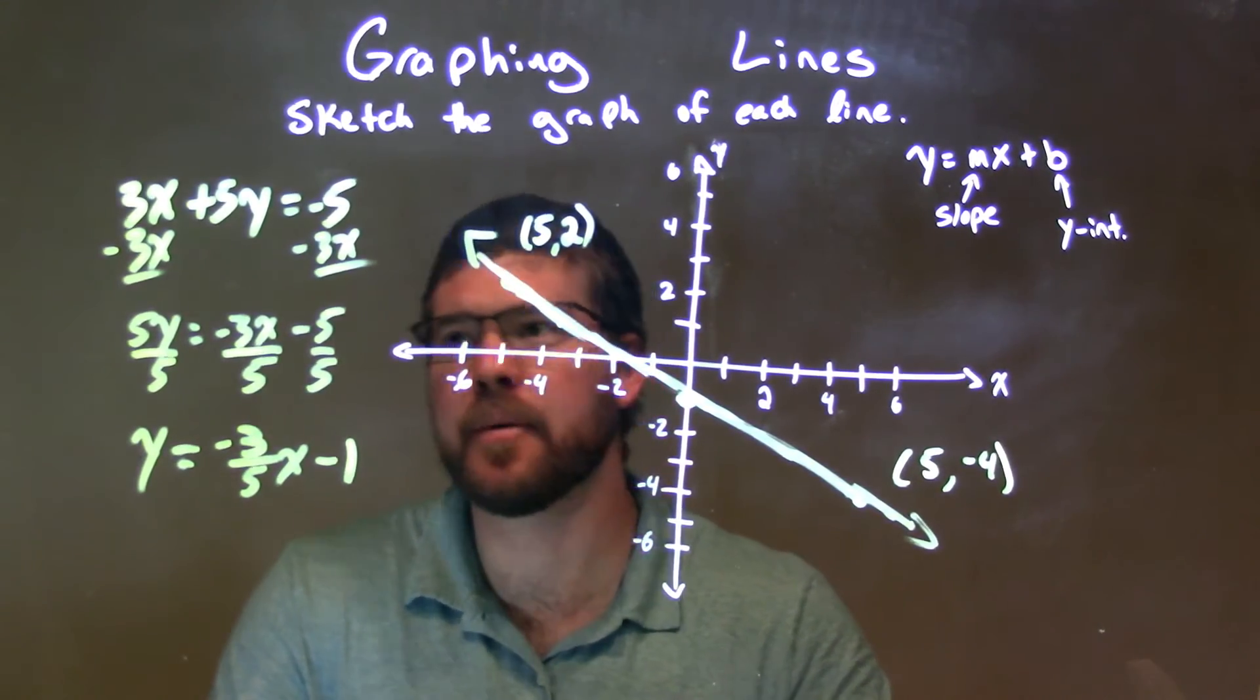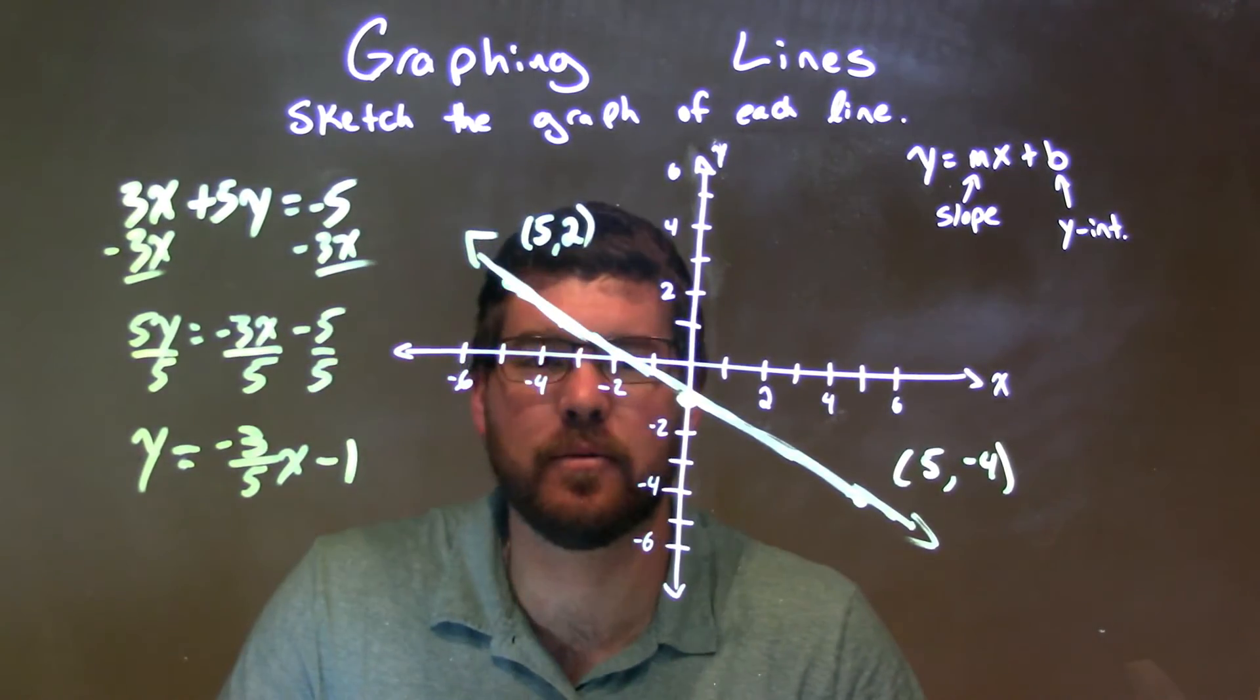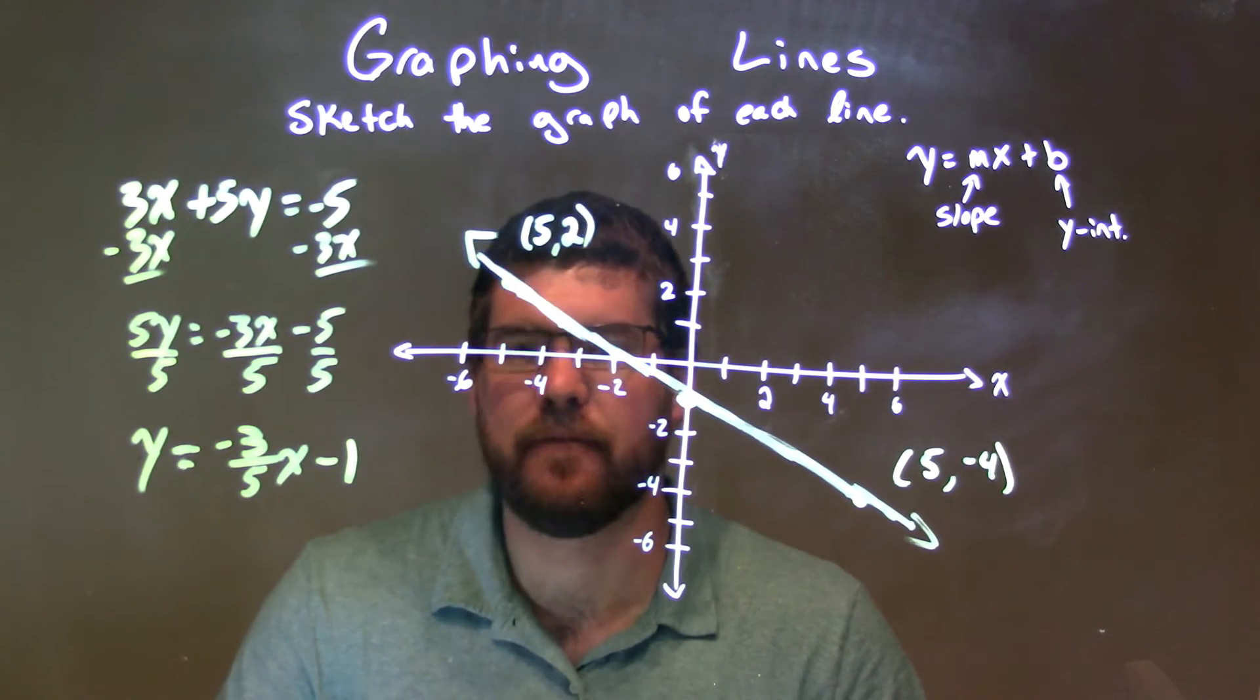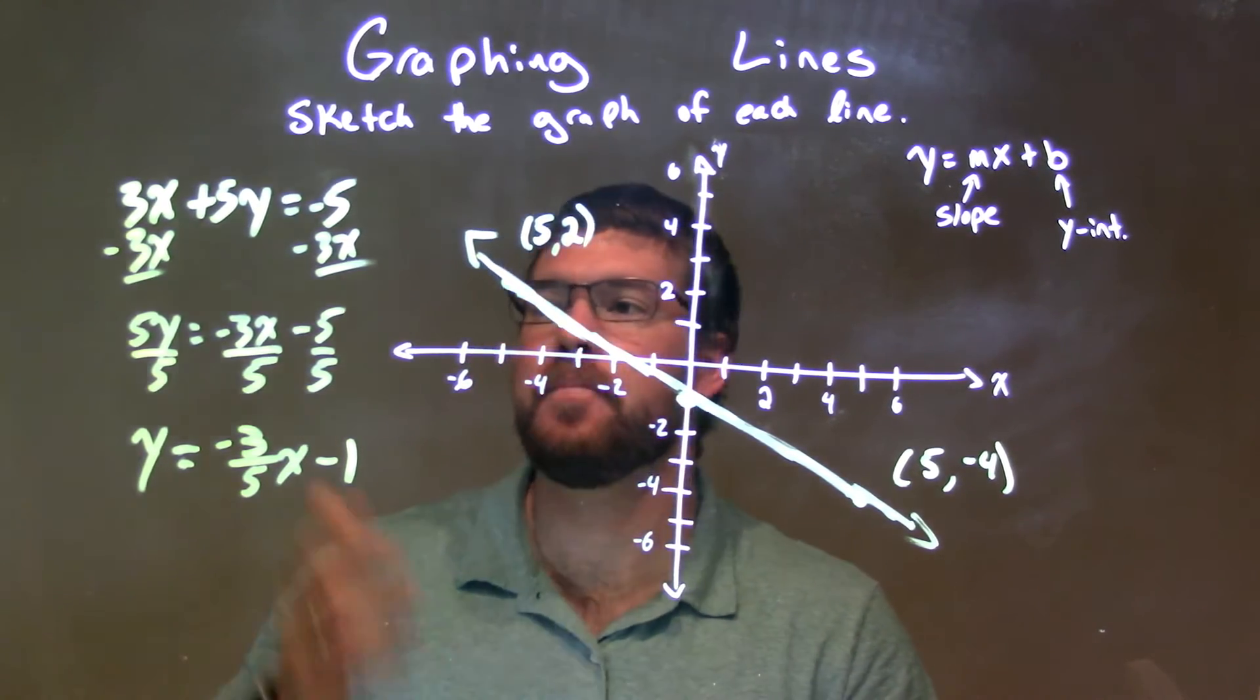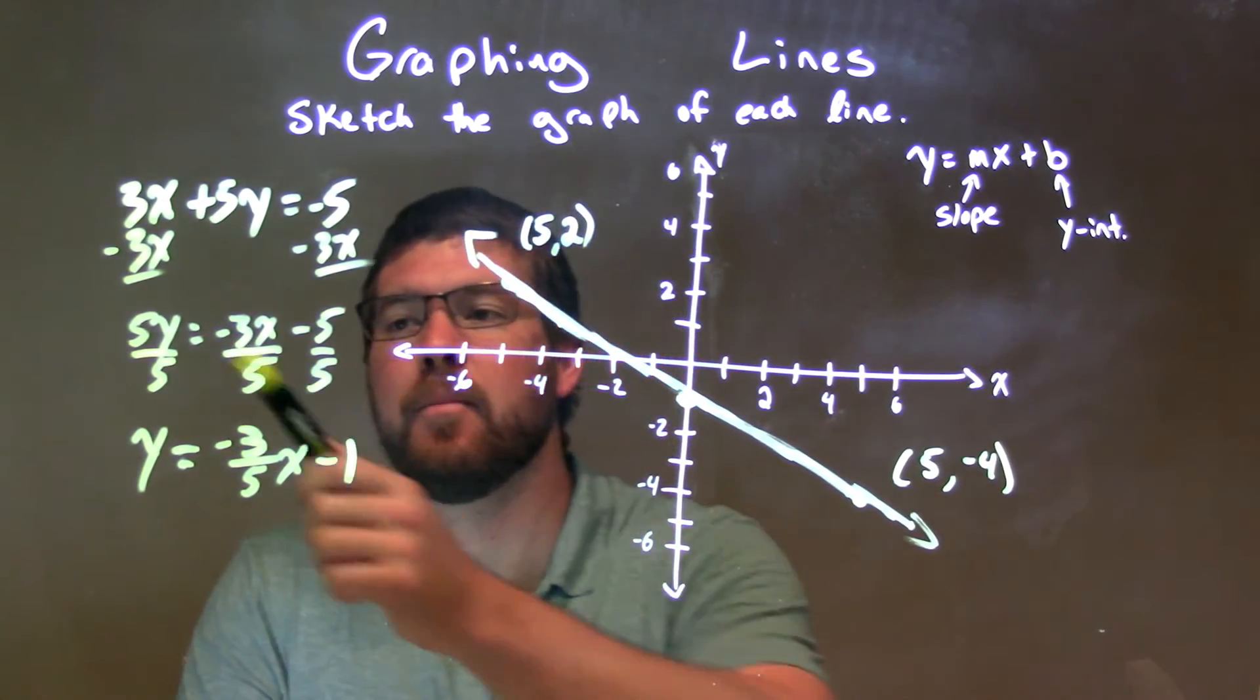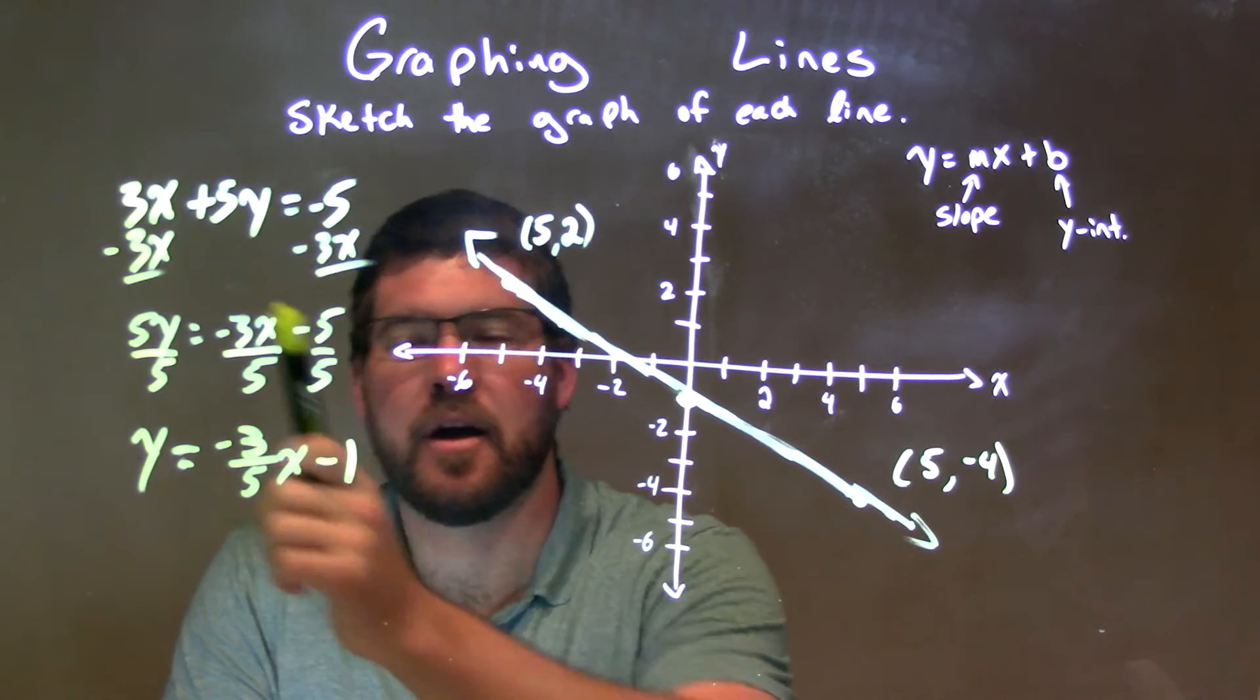So let's go through a quick recap here. We're given 3x plus 5y equals negative 5. I want to get it in slope-intercept form, so I get y by itself. So I subtracted 3x to both sides, then I divided by 5 to both sides. Make sure we divide by 5 to everything on both sides.